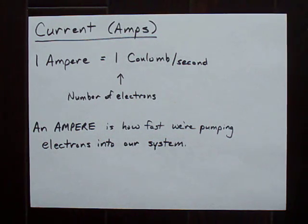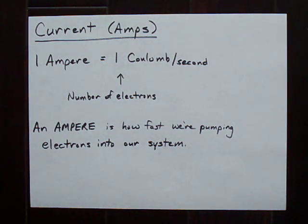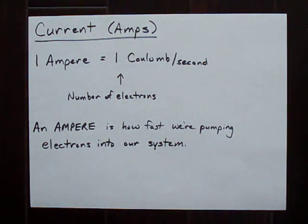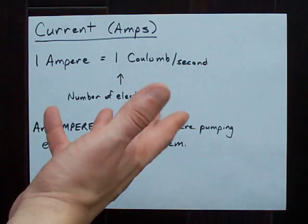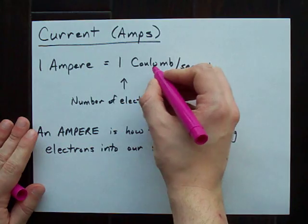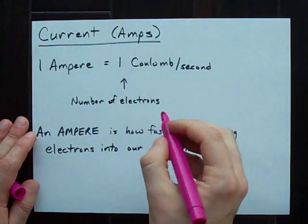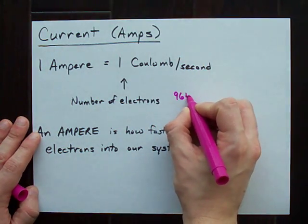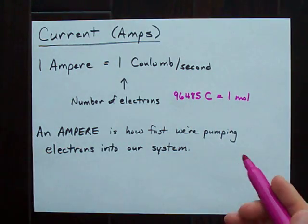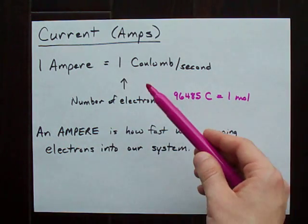Hey guys, one of the extra little bonuses of electrochemistry is working with current, or amps, as you probably know them. One ampere is one coulomb per second. And what I want to point out is that a coulomb is really just a measure of how many electrons are going in. One coulomb per second counts how fast we're pumping electrons into the system. Knowing that 96,485 coulombs is one mole of electrons shows you that coulombs is just another way to count.